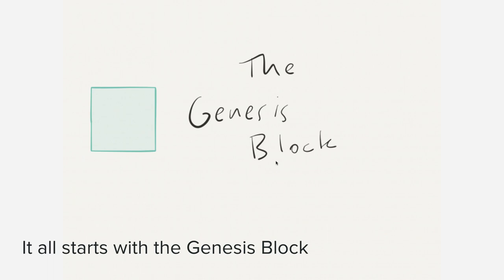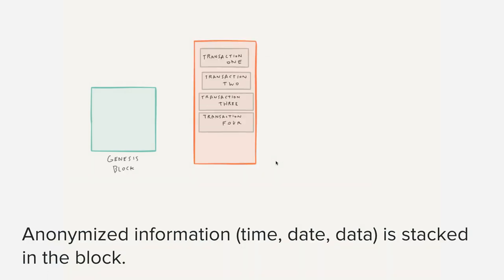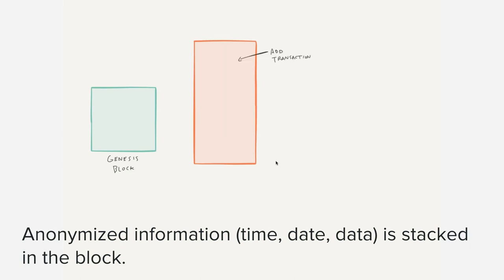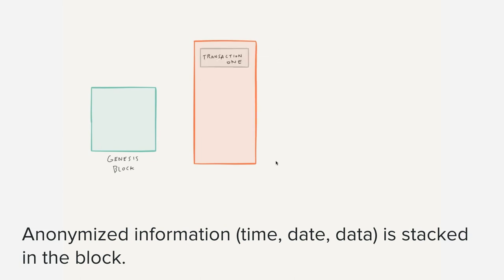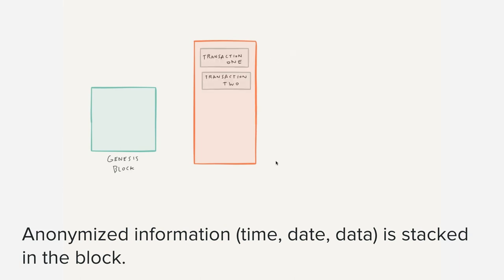The blockchain starts off with the Genesis block — that's the initial block in the sequence. It contains information about the database, the rules, and all the information that's there — it's really the first block in the entire system. The very next block after the Genesis block contains anonymized information. This anonymized information is stacked in individual blocks, and many of these are time-sequenced. For the Bitcoin blockchain, when we have a transaction — for example, sending 5 Bitcoin to another individual — those transactions are stacked up in individual blocks. All of the information in the blocks is anonymized; it includes time, date, and other data.